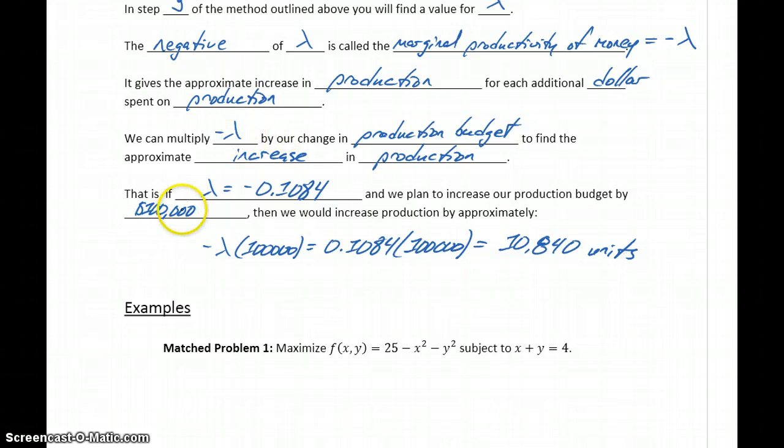We know this value for lambda. We know how much more we plan to spend on production. What this is giving us is an estimate for how much our production should actually increase.